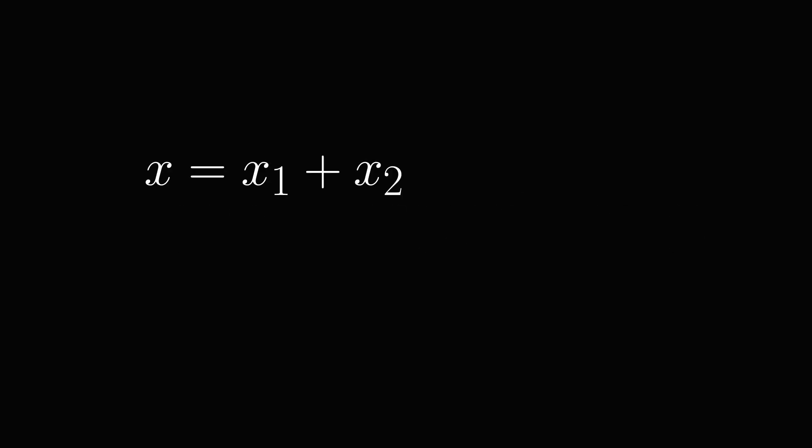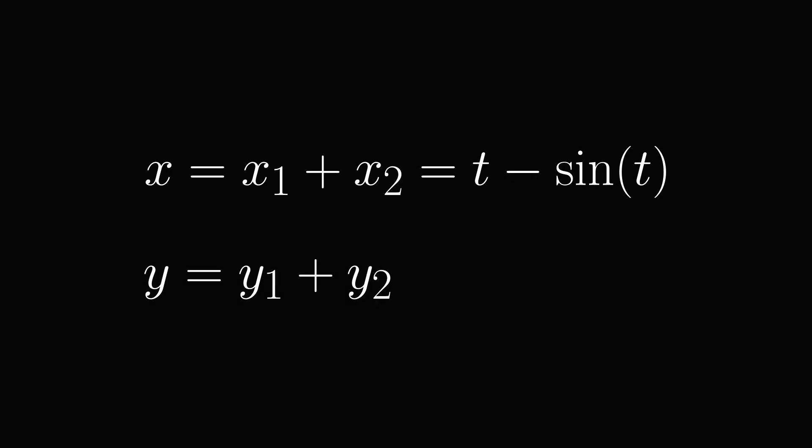Now we're not completely done just yet, because we still need to add the two functions together. x equals x1 plus x2, which ends up being t minus sine theta, and y equals y1 plus y2, which ends up being 1 minus cosine theta.